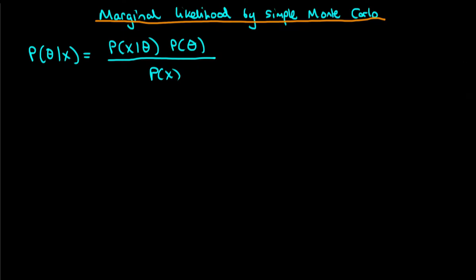Just a reminder of what the marginal likelihood is. We've got Bayes' rule here on the left. The denominator of Bayes' rule, P of X, is what we refer to as the marginal likelihood. We're interested in this because it allows us to do model comparison. This denominator term P of X is sometimes actually written as Z, where Z stands for the partition function in statistical mechanics. So Z is equal to P of X.